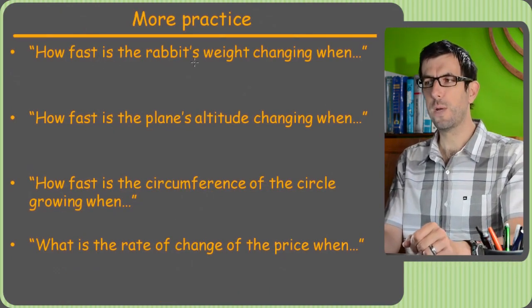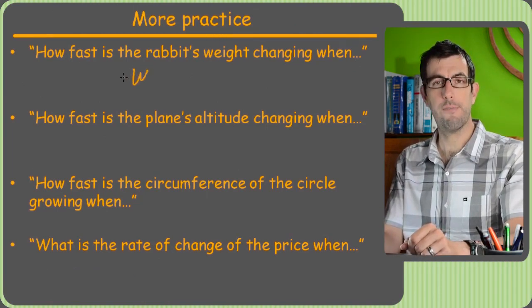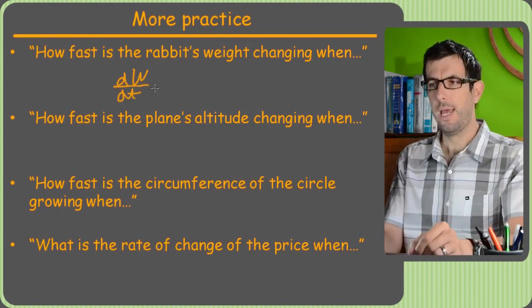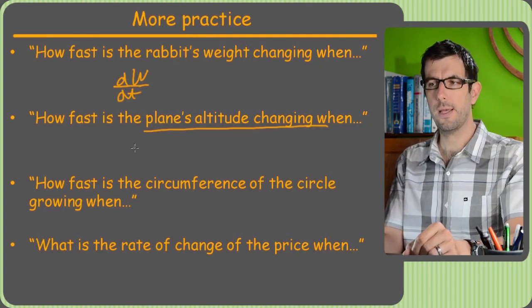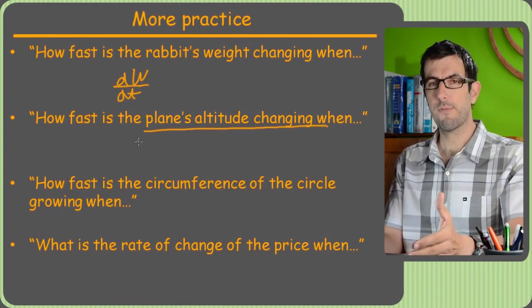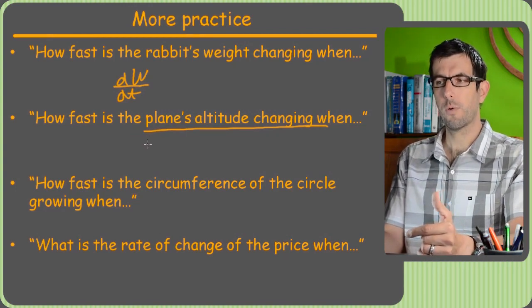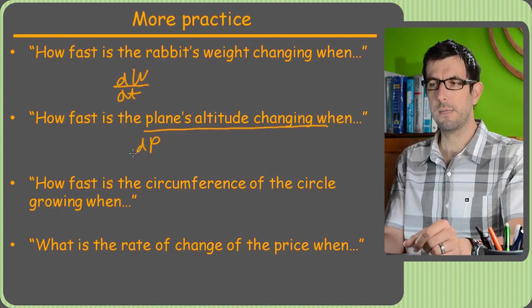Let's do some more. How fast is the rabbit's weight changing? Hmm. Well, w seems like a good letter for weight. So let's just see how fast that's changing with respect to time. How fast is the plane's altitude changing? I don't know. Let's call it, you know, we already used capital A for altitude. We could use A again, or we could just use P or something, like maybe P for plane's altitude. I don't know. So that'd be dP/dt.